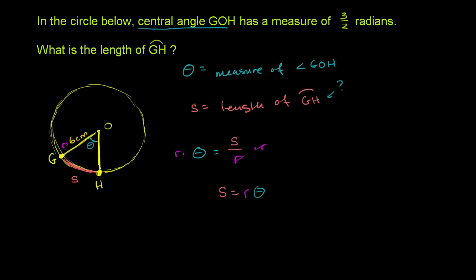So what else do we know? Well, we know the radius is 6 centimeters. We multiply that times the angle in radians, which is 3 halves radians. So S is equal to 6 centimeters times 3 halves. This is going to be equal to 6 times 3 is 18 divided by 2 is 9. So it's equal to 9 centimeters. And we are done.